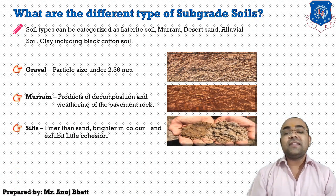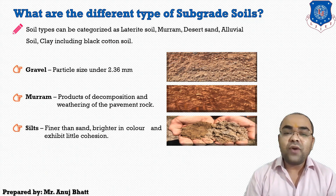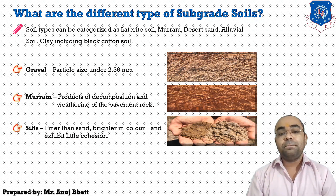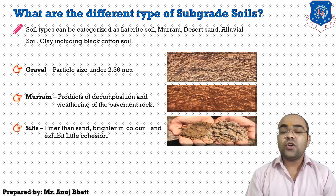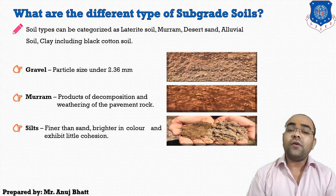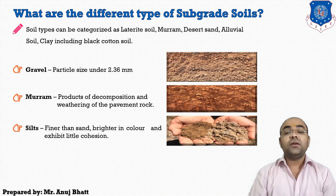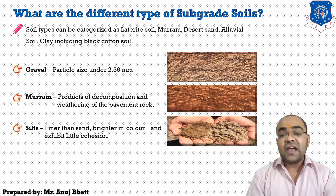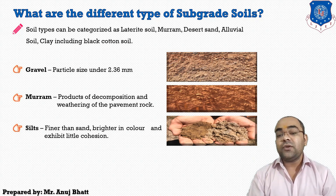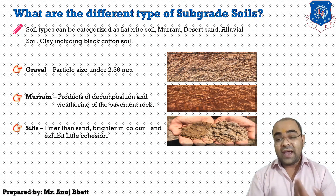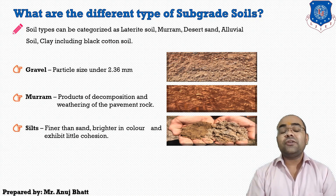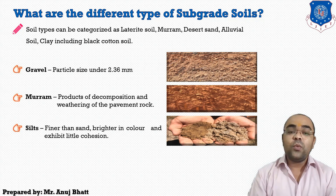The next type is silt. Silt soils are finer than sand and brighter in color compared to clay soil, and they exhibit little cohesion. When a lump of silty soil mixed with water is alternately squeezed and tapped, a shiny surface appears — this is a specific property of this particular soil. So if you observe a shiny surface, silt soils are generally identified.